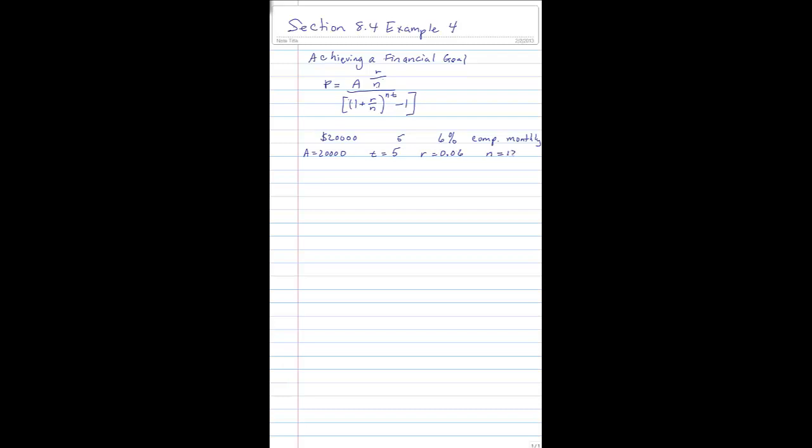So our equation becomes P equals 20,000 times 0.06 divided by 12, divided by parenthesis, another parenthesis, 1 plus 0.06 divided by 12, all raised to the 12 times 5 power, and we're going to subtract 1 from that.